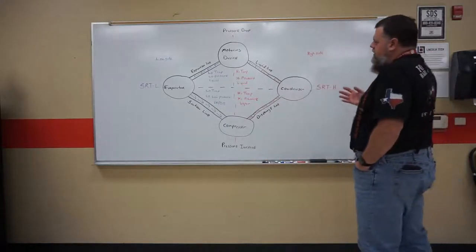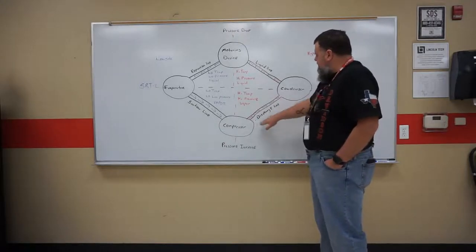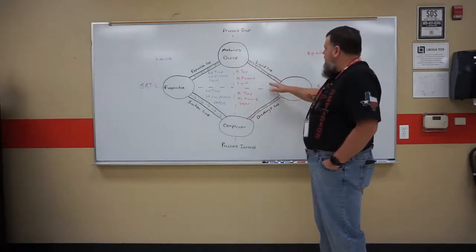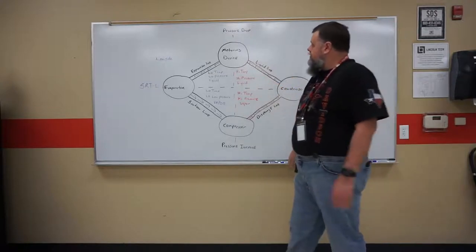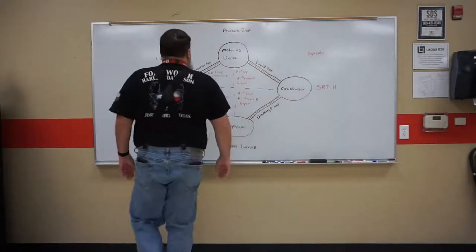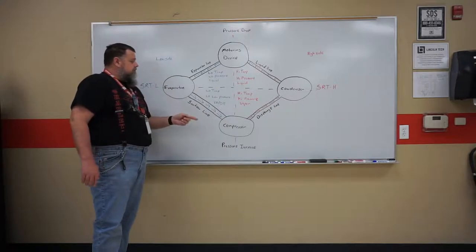Okay, we'll talk a little bit more about this today. We talked about we have a discharge line connecting the compressor to the condenser, a liquid line connecting the condenser to the metering device, the expansion line connecting the metering device to the evaporator, and the suction line from the evaporator to the compressor.